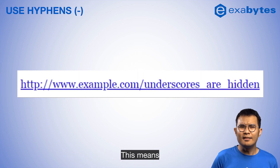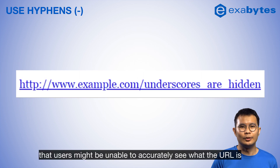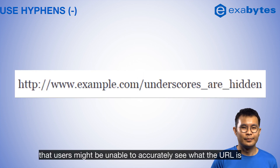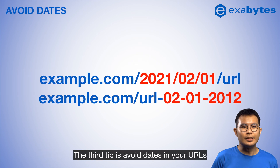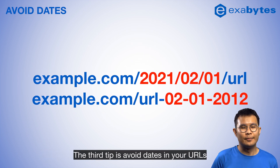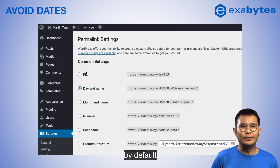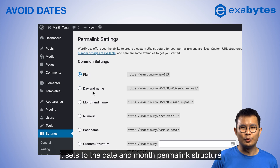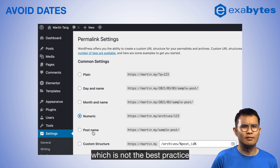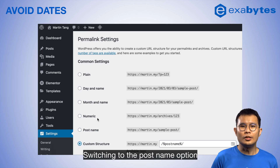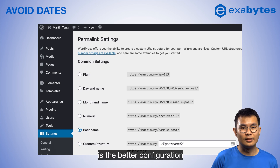This means that users might be unable to accurately see what the URL says. The third tip is to avoid dates in your URL. If you're using WordPress, by default it sets the date and month formatting structure, which is not the best practice. Switching to the post name option is the better configuration.